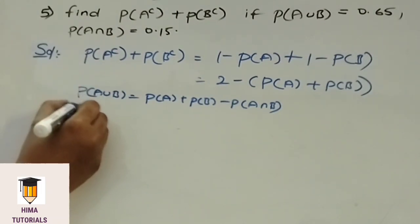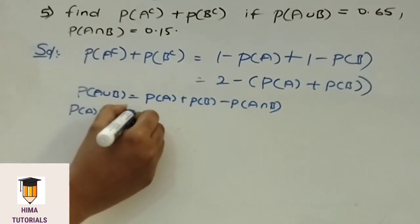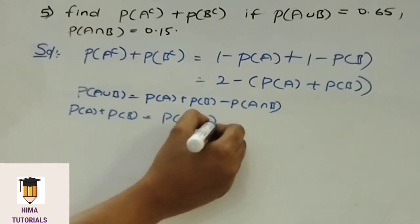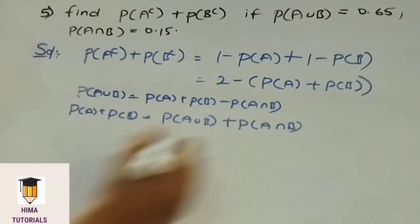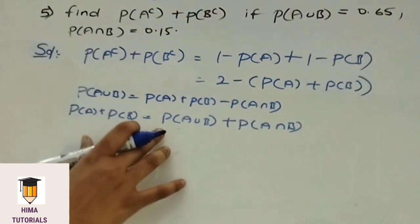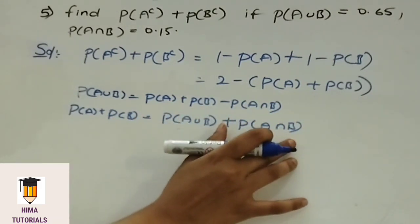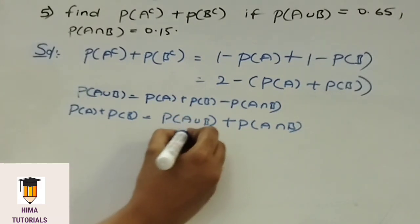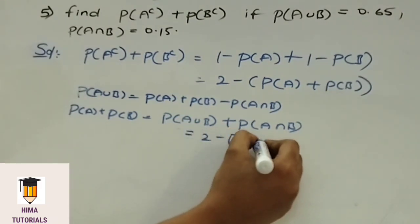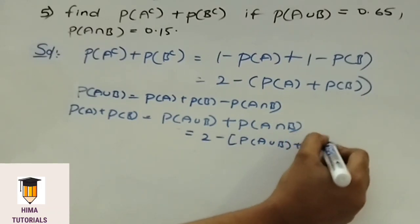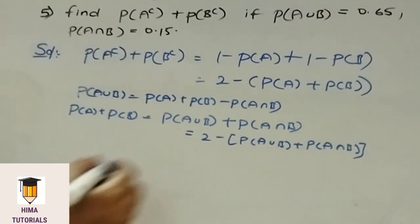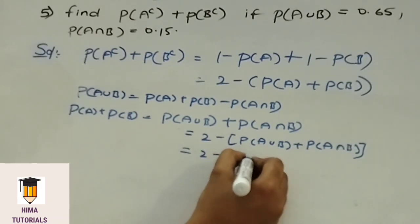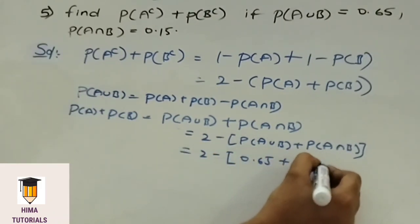From this formula we can write P of A plus P of B is equal to P of A union B plus P of A intersection B. Now substitute this in place of P of A plus P of B. Then we get 2 minus of P of A union B plus P of A intersection B. Substitute 2 minus of 0.65 plus 0.15.